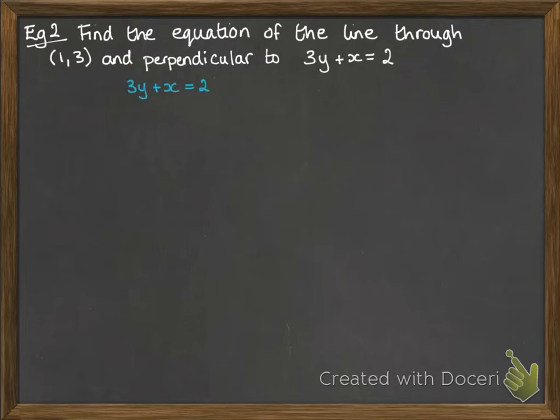From that line 3y plus x equals 2, we need to get the gradient of what that line would be. Let's just rearrange that into y equals mx plus c form so that we can read off that gradient. The gradient of this line is minus a third. The gradient that we actually want is the gradient that would be perpendicular to that. Perpendicular would be the negative reciprocal of minus a third. So, that would be 3.